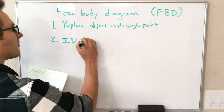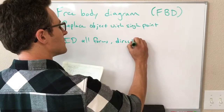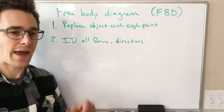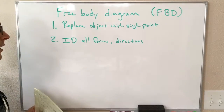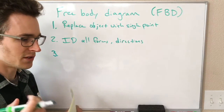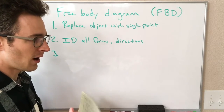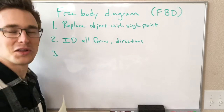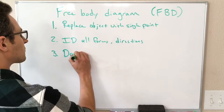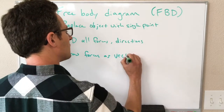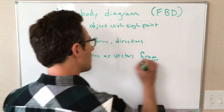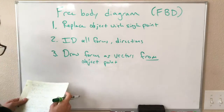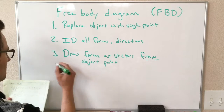Step two is to identify all the forces and their directions. These may be given to you in the problem, or you may be told some of them and you're trying to find the other one, in which case you'd have to add an unknown question mark force on the object. Eventually we will learn how to translate a picture or description of a block on a ramp and draw all the forces using things we're going to learn in chapter four. Step three is to draw the forces as vectors from the object point — it's best shown with an example rather than described.